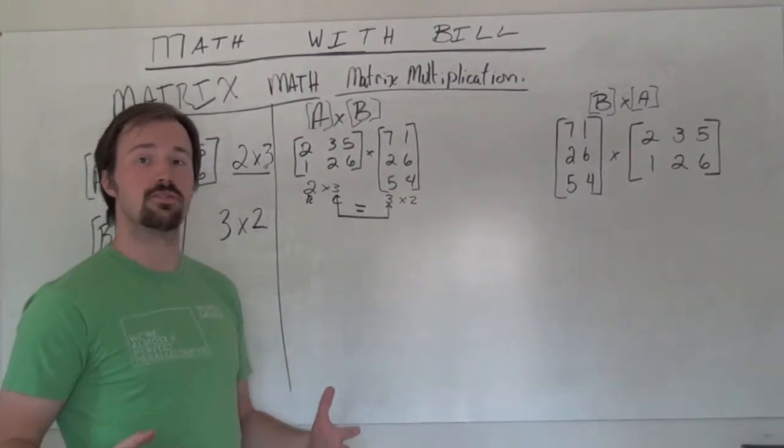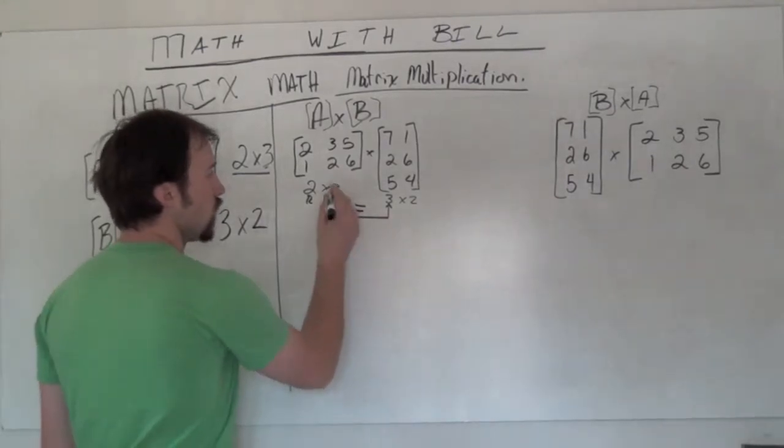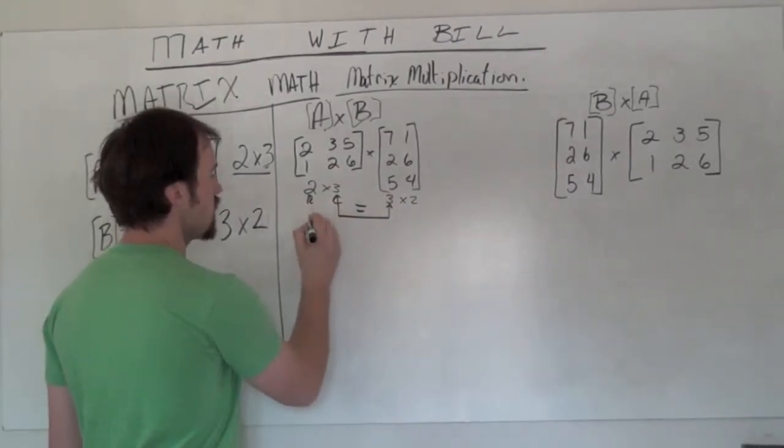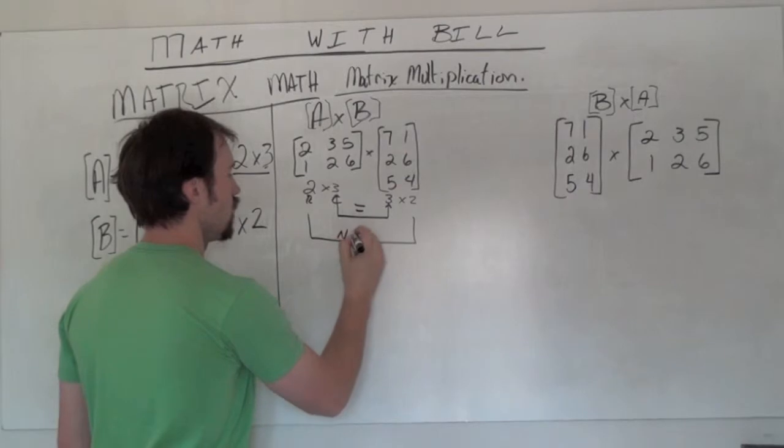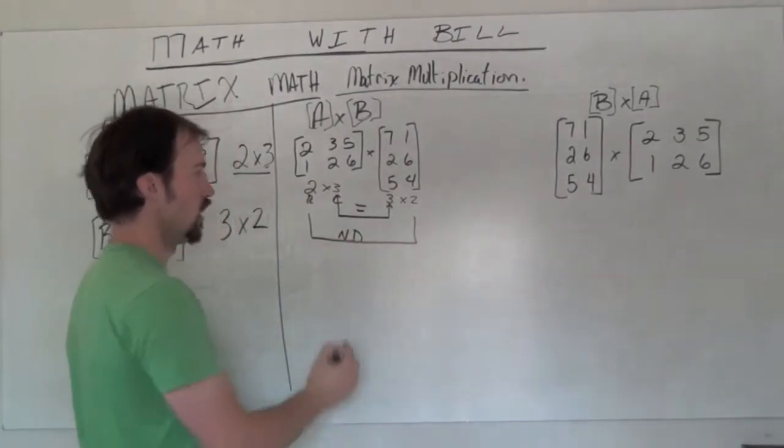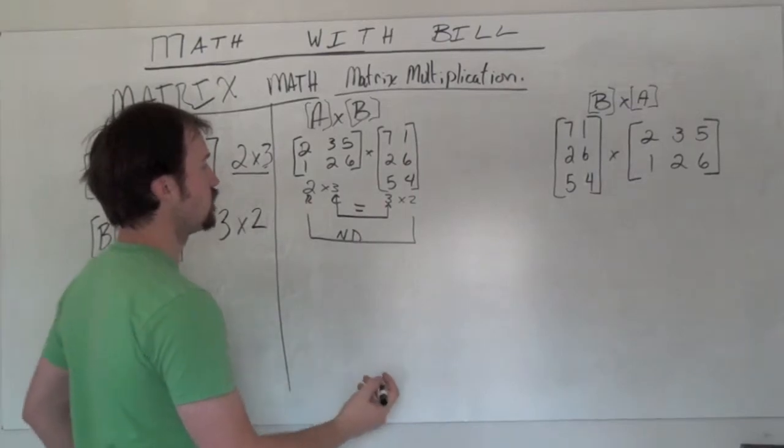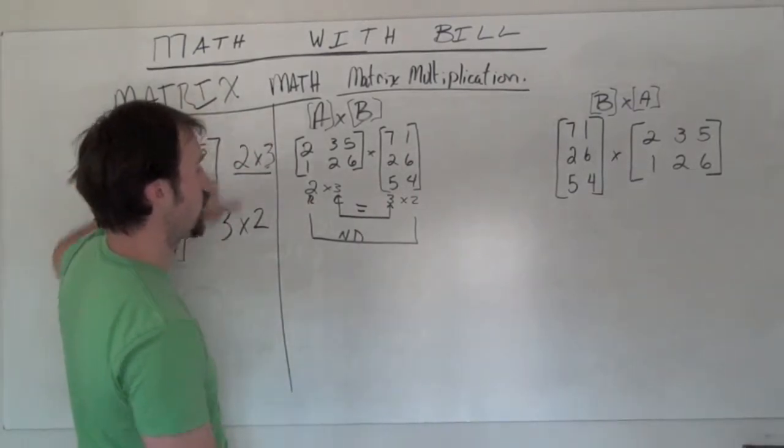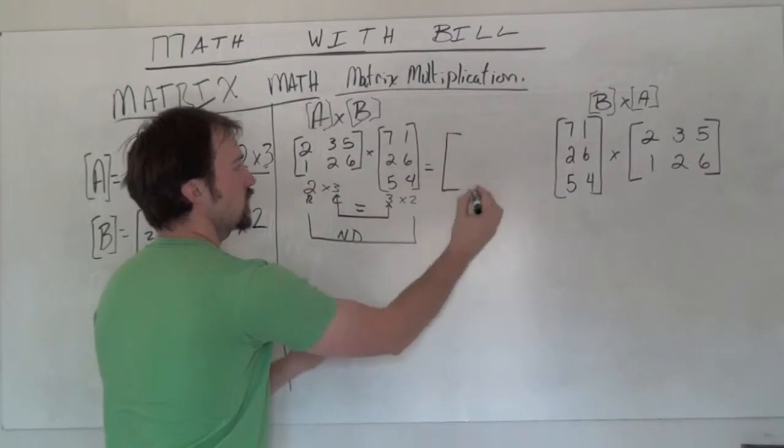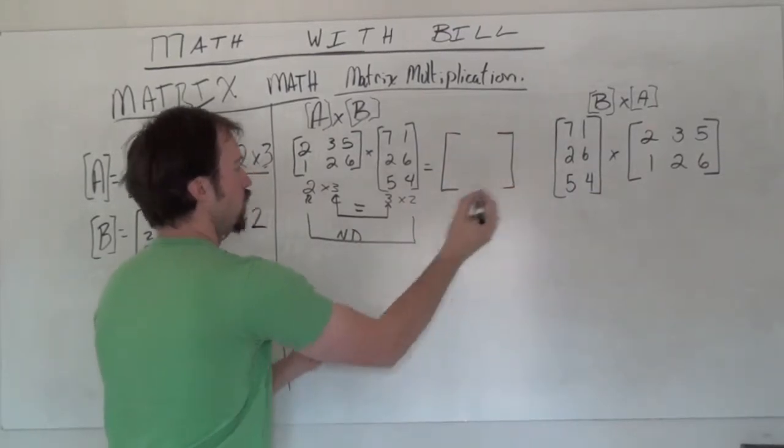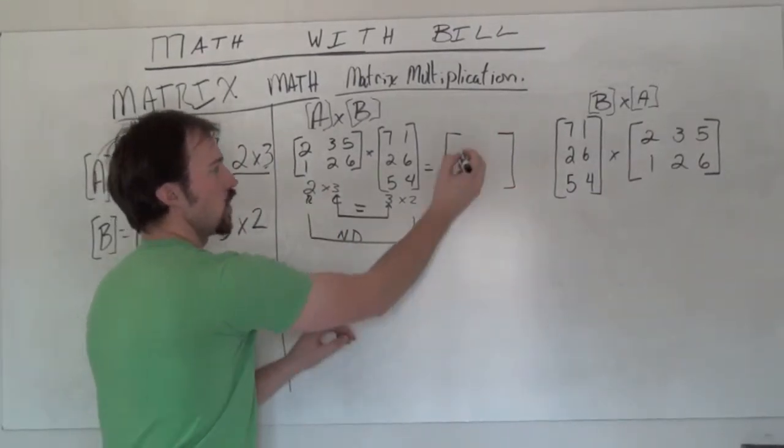But because these are, we'll be fine. So with the inside dimensions being the same, new dimensions are the outside here. And this matrix A times matrix B goes like this. We're going to multiply and we're going to get a new matrix with dimensions of 2 rows and 2 columns.